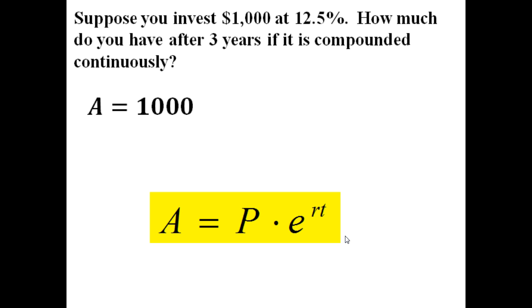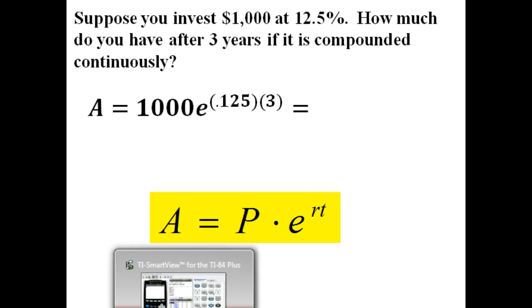So I've got my initial investment is $1,000. So I'm just filling in this equation. Times E, that's the number E, our rate is 12.5. Now that's 12.5 percent. We've got to convert that to a decimal, and as a decimal that would be .125. Times T. T is our three, that's our time, number of years. So let's pull in our calculator here.